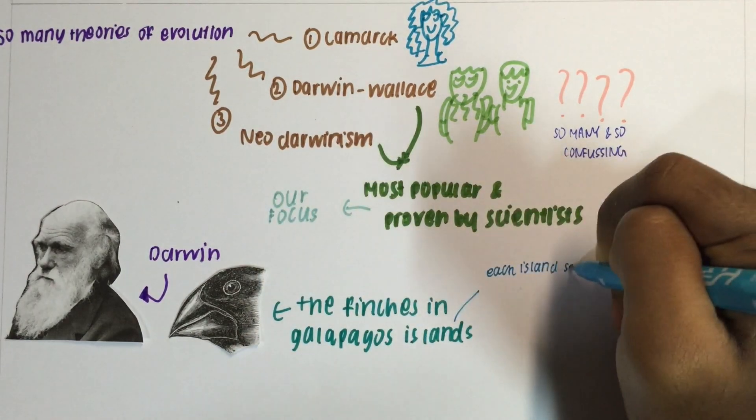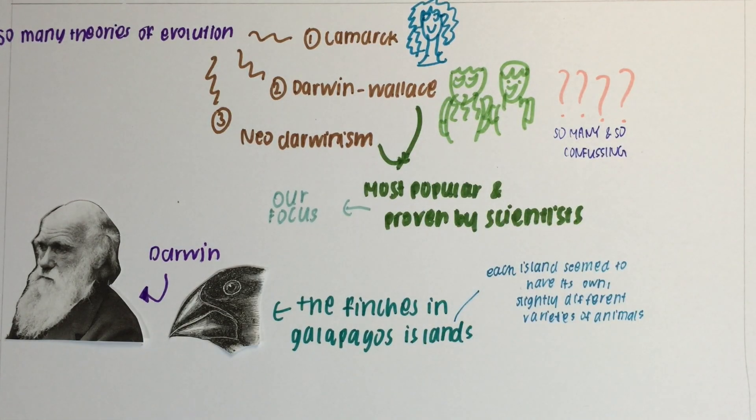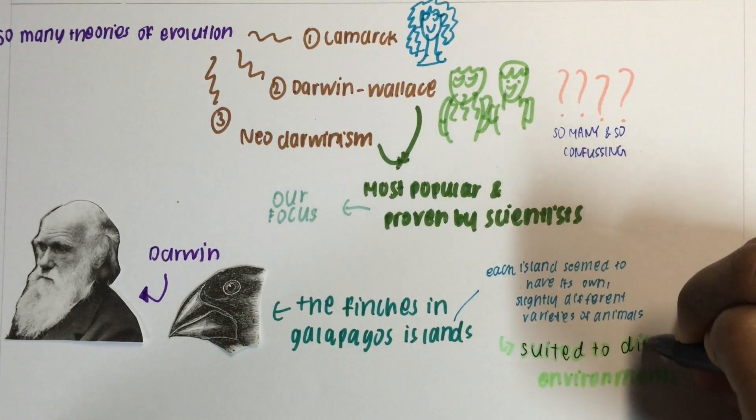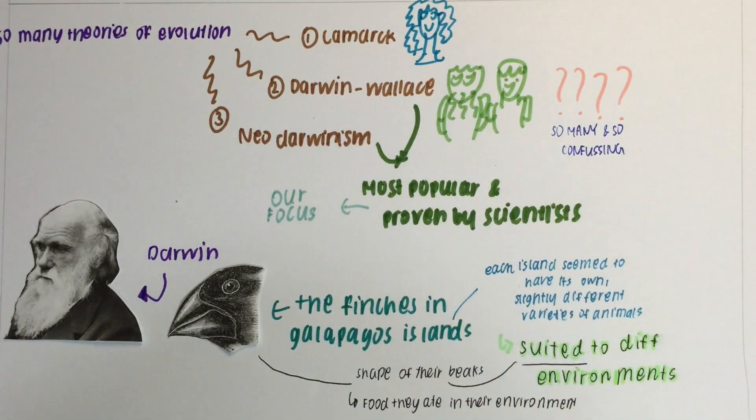In the Galapagos Islands, he noticed they were different in each island but had similar traits. He later found out that what differed was their beaks, because the shape of the beaks was suited to the type of food found in each island around Galapagos.